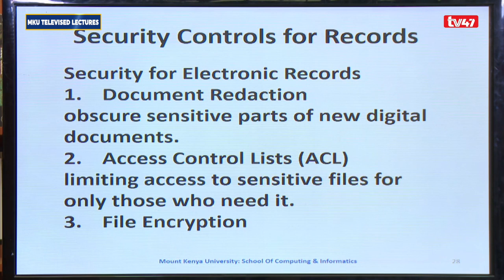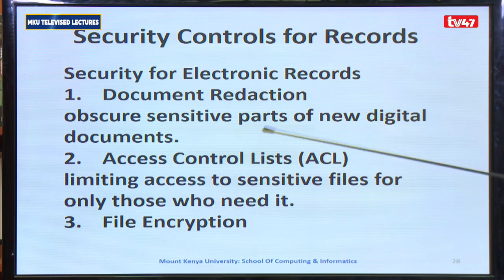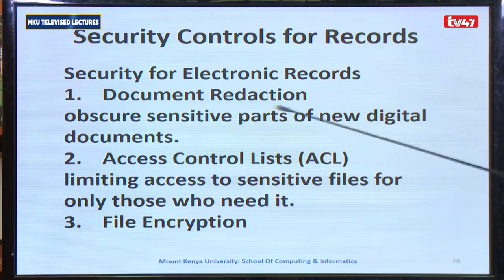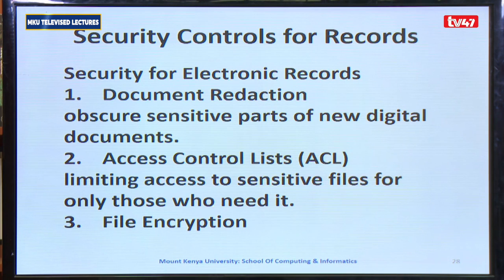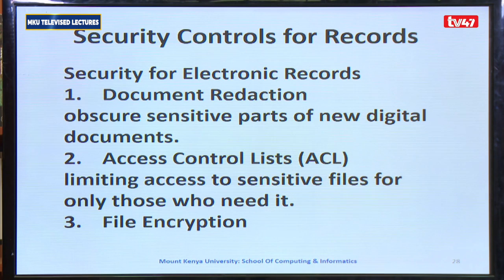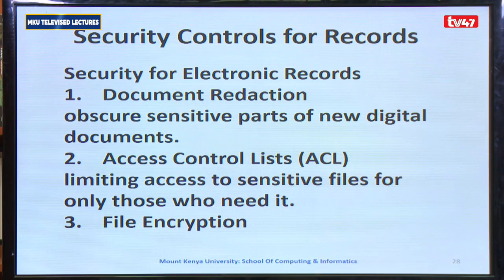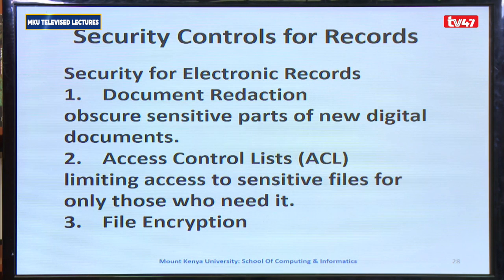The other controls for electronic records include: document redaction — securing sensitive parts of new digital documents; access control lists (ACL), limiting access to sensitive files for only those who need that information; and finally file encryption, where data is encrypted and kept under a password for only the intended and authorized recipients.